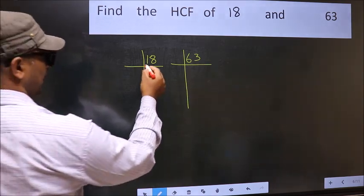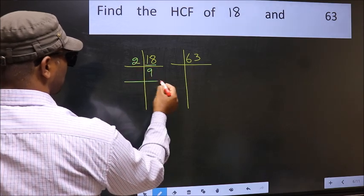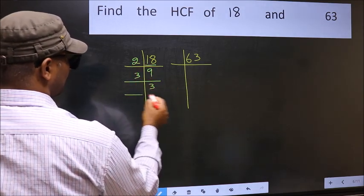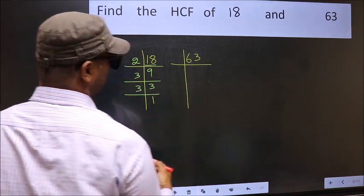Here we have 18. 18 is 2×9. 9 is 3×3. 3 is a prime number, so 3×1 is 3. Now the other number.